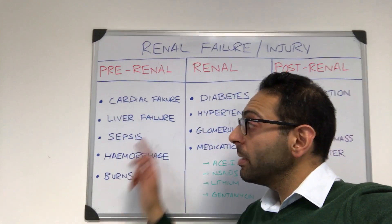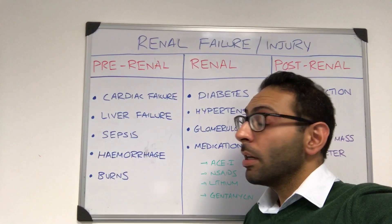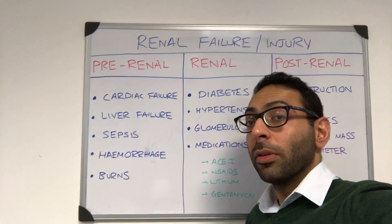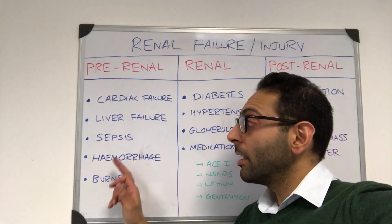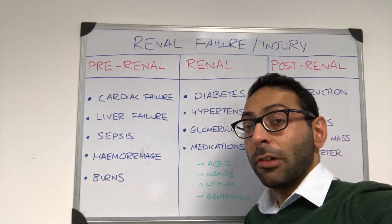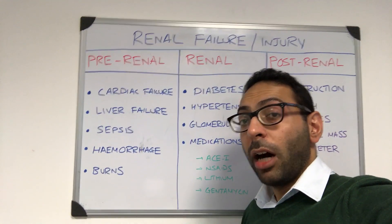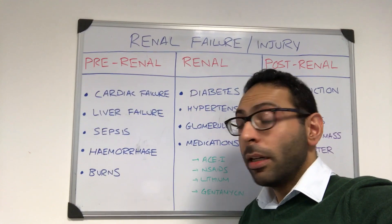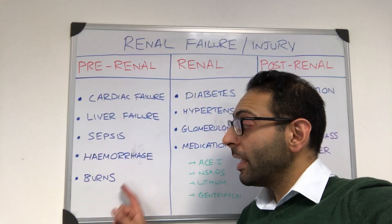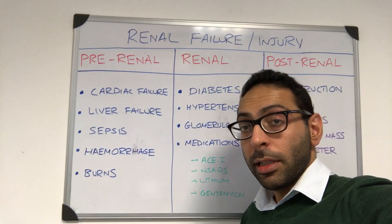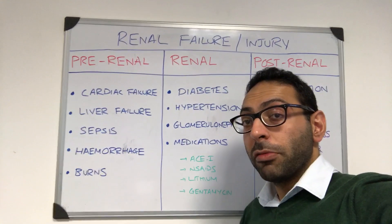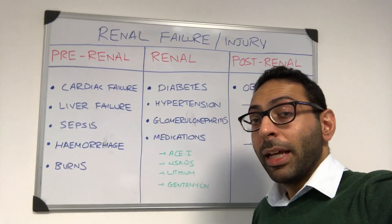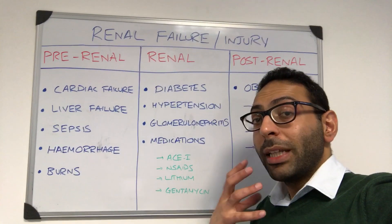Pre-renal causes include things like reduced cardiac output — heart failure, liver failure, sepsis for example — and hypovolemia, such as bleeding or burns. These tend to cause more acute kidney injury pictures.